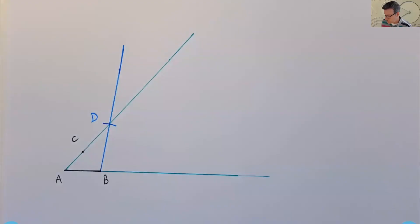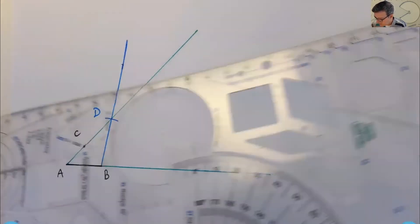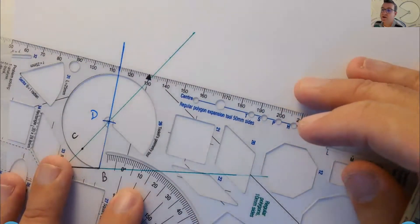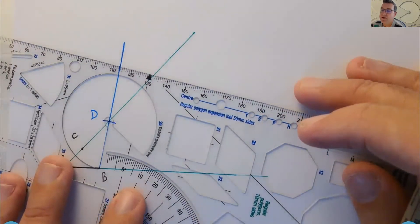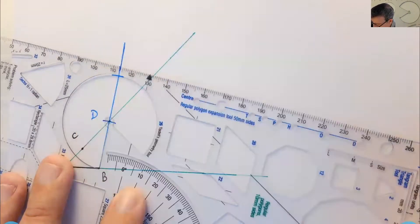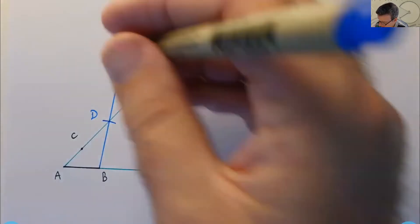And then I'm going to place the circle arc template at my new point D and center it there. And I'm going to make another mark. So another point there, say E.